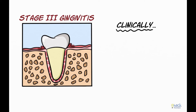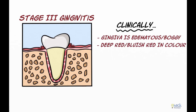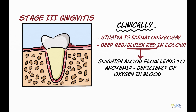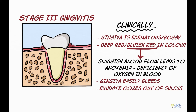Clinically, the chronically inflamed gingiva is edematous, boggy, and is deep red or bluish-red in color. The bluish hue is due to the sluggish blood flow, which may cause anoxemia or deficiency of oxygen in the blood. Gingiva in this stage easily bleeds and exudate can be seen oozing out of the gingival sulcus.